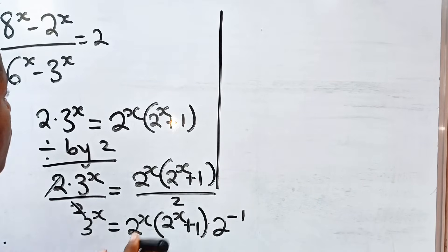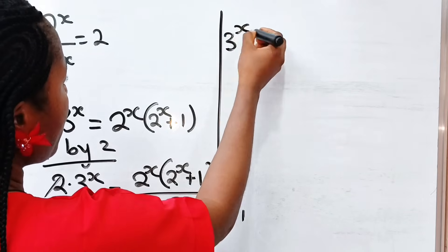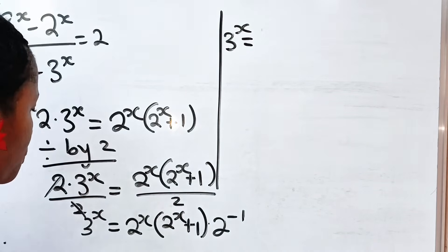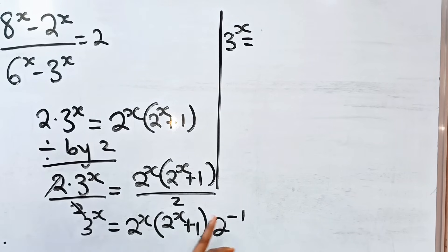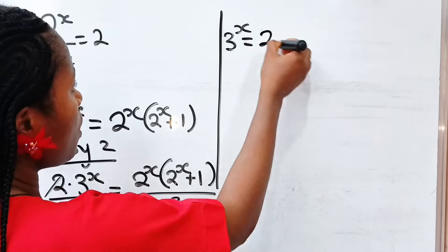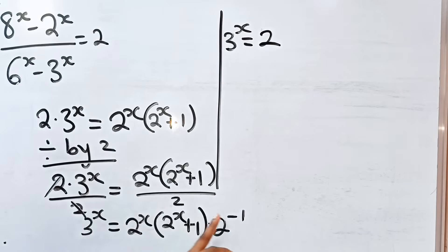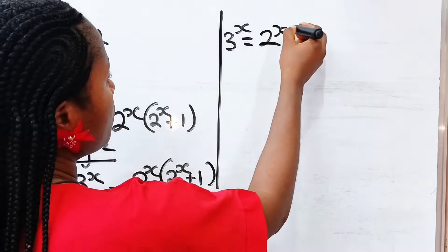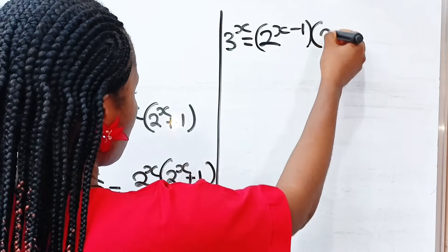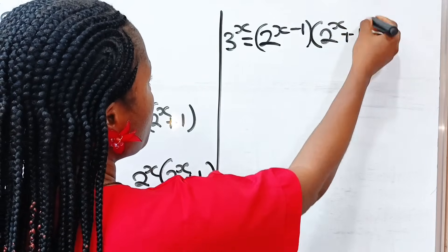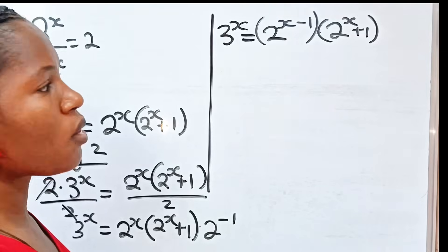So we have 3 to the power of x is equal to: remember that 2 to the power of x multiplied by 2 to the power of minus 1 — we pick one base and add the powers, which gives x minus 1. Then multiplied by 2 to the power of x plus 1.